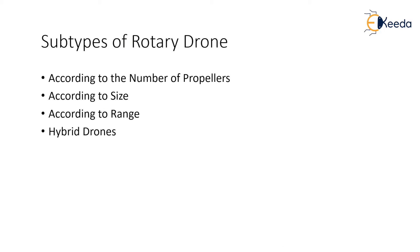Multirotors are further classified into bicopter, tricopter, and many more based on the number of propellers; according to the size of the drone, whether they are nano, medium, or large; according to the range of the drone based on long endurance or short endurance; and finally hybrid drones, which are a hybrid of multirotor and fixed wing drones. This classification is very important because depending on the requirement of the mission, the type and subtype of drone will be selected. It is very important to know the different subtypes, the pros, cons, and what qualifies that particular type for the mission.